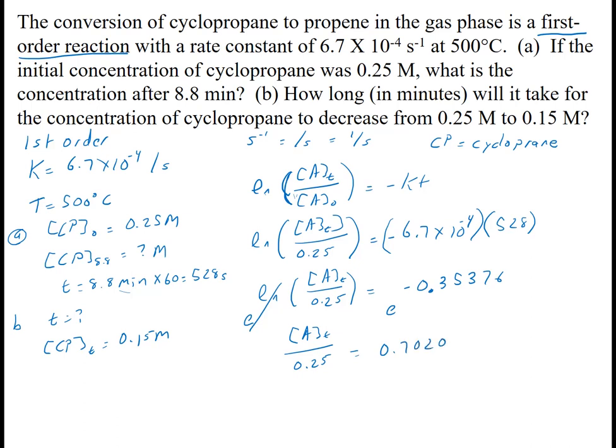So now I want to multiply. So concentration at time T is 0.0702 times 0.25 and that gives me 0.176 molar.